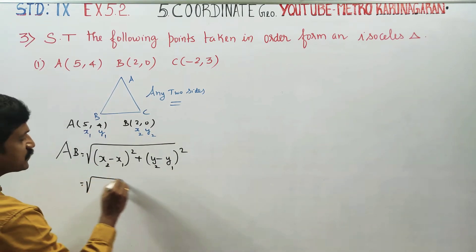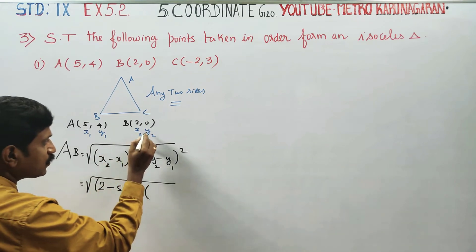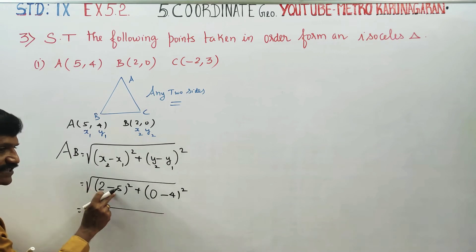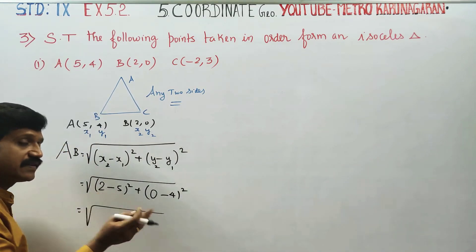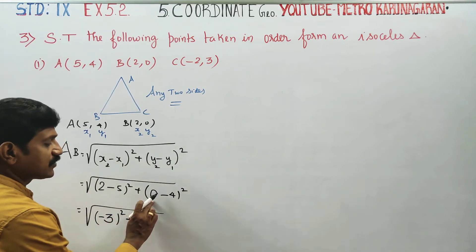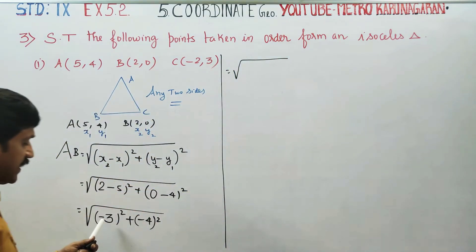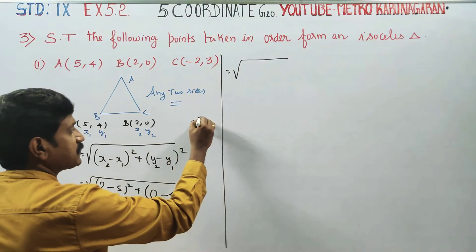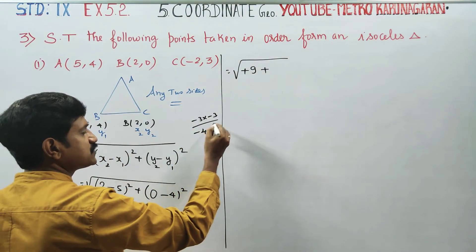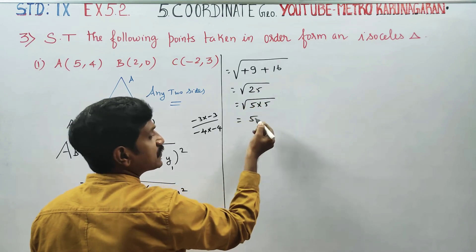Substituting: X2 is equal to 2, minus X1 is equal to 5. Y2 is equal to 0, minus Y1 is equal to 4, all squared. So we get: square root of (2 minus 5) squared plus (0 minus 4) squared. That is square root of minus 3 squared plus minus 4 squared. Which equals square root of 9 plus 16.